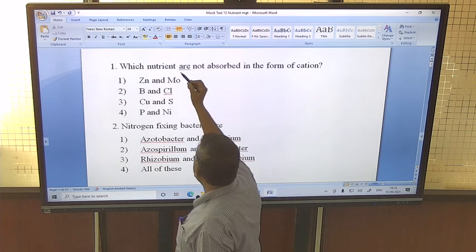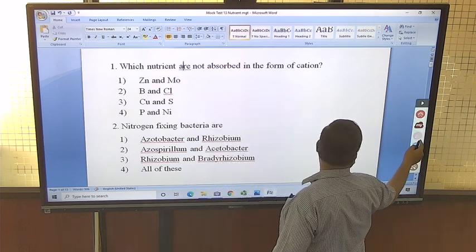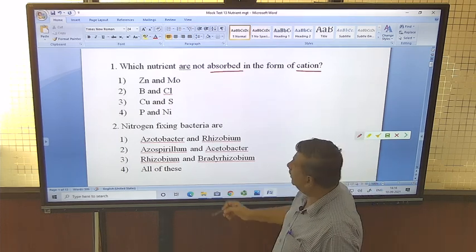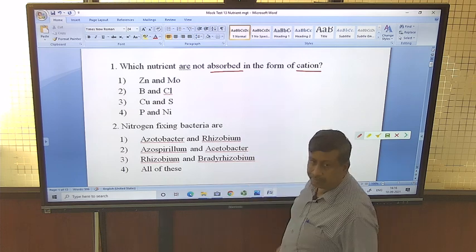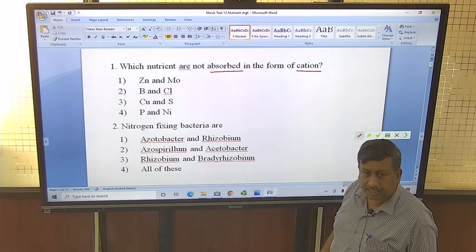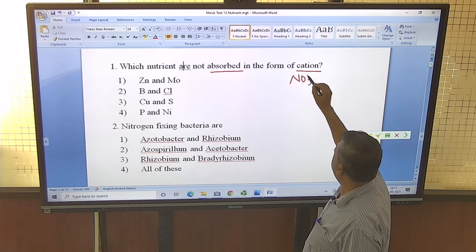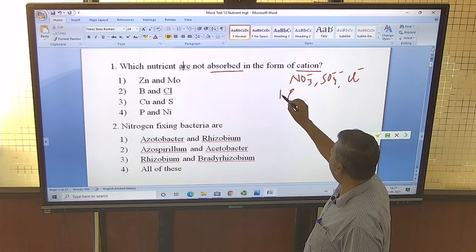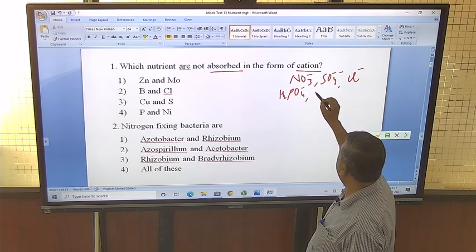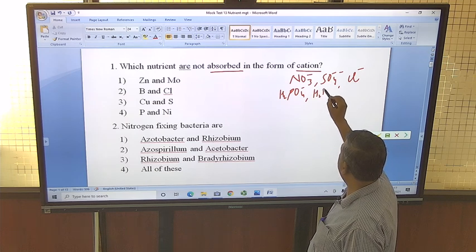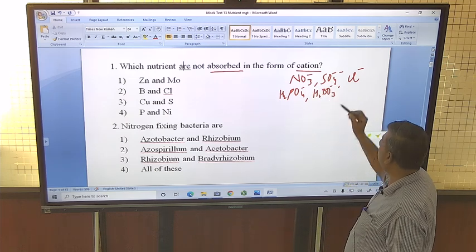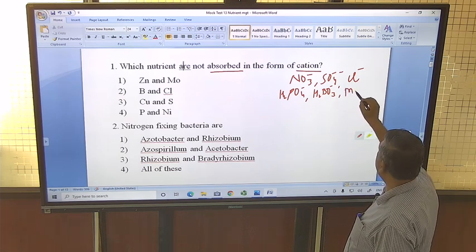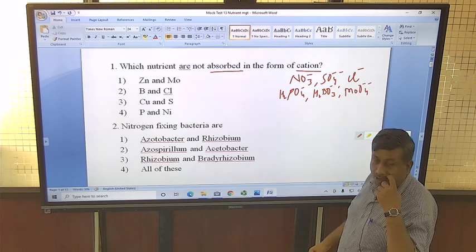Question number one: which nutrients are not absorbed in the form of cation? First make a list of nutrients which are absorbed in anion form, like nitrate, sulphate, chloride, then phosphate H2PO4-, then borate H2BO3- and HBO3-, and molybdenum.